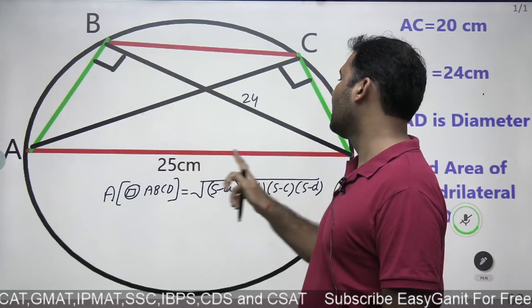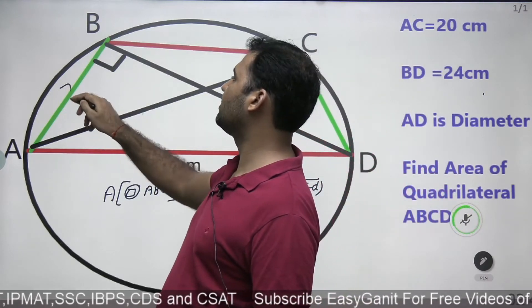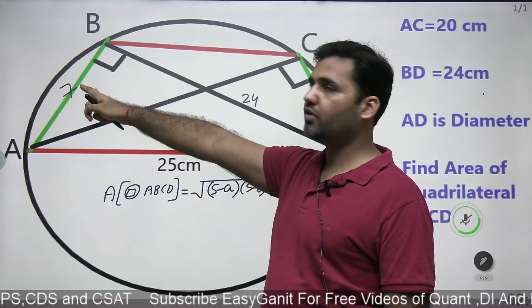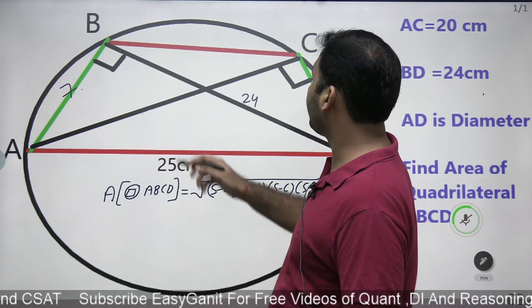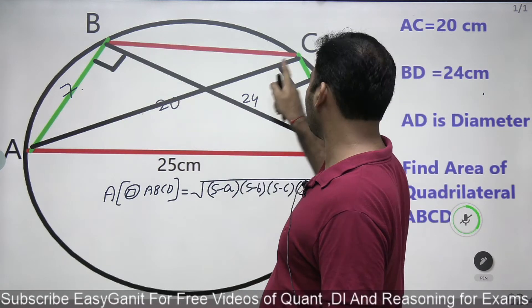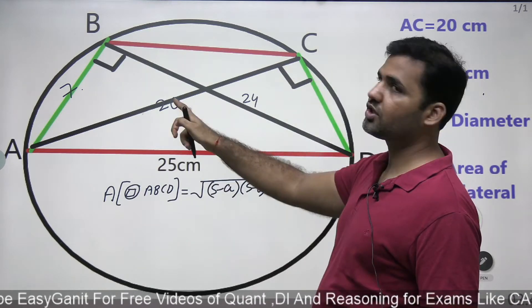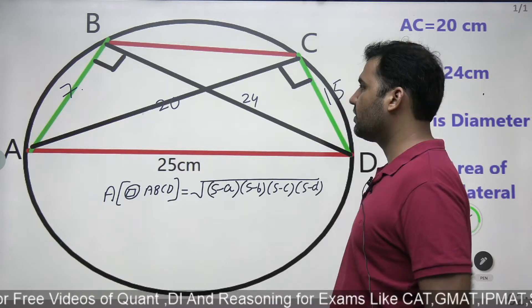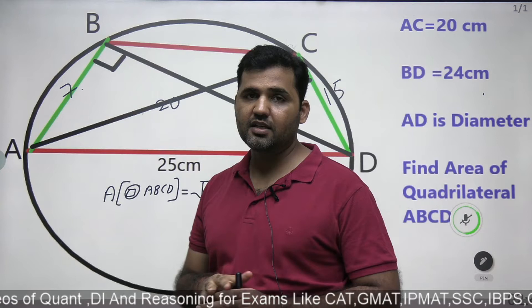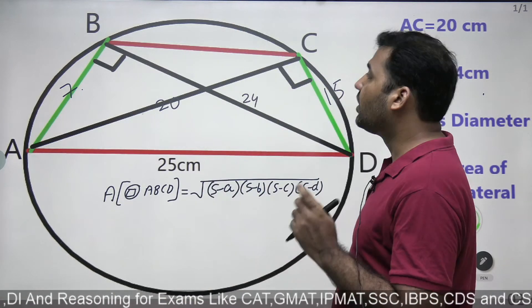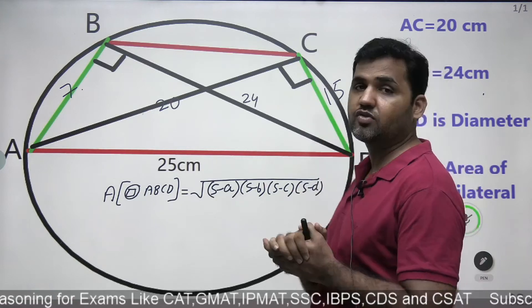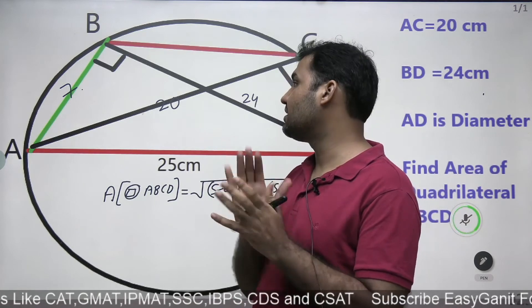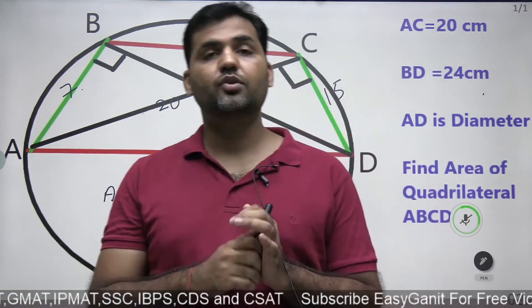This length (BD) is given as 24 and the diameter is 25. Can I apply the Pythagorean theorem here? 25² − 24² = 49, and square root of 49 is 7. So this side is 7. Also, the length of AC is given as 20 centimeters and the diameter is 25. So again applying the Pythagorean theorem: 25² − 20² = 225, and square root of 225 is 15 centimeters. So this side is 15 centimeters. Finding these two sides is very easy. What we need now is the length of BC.